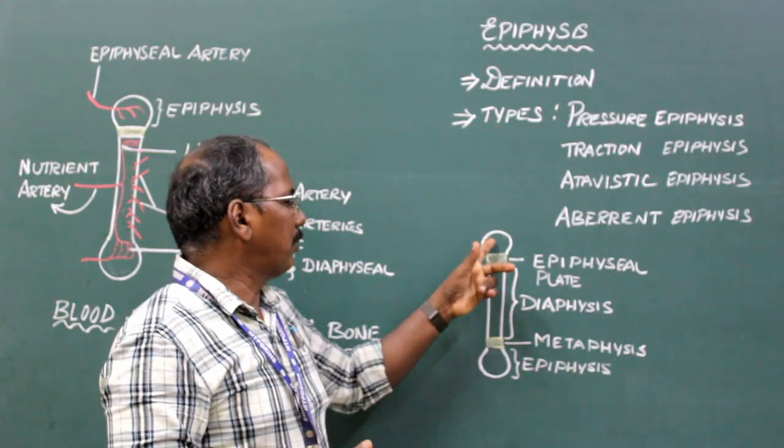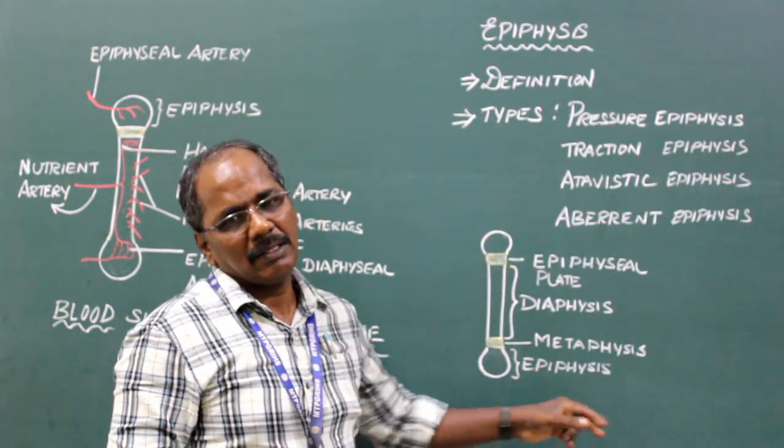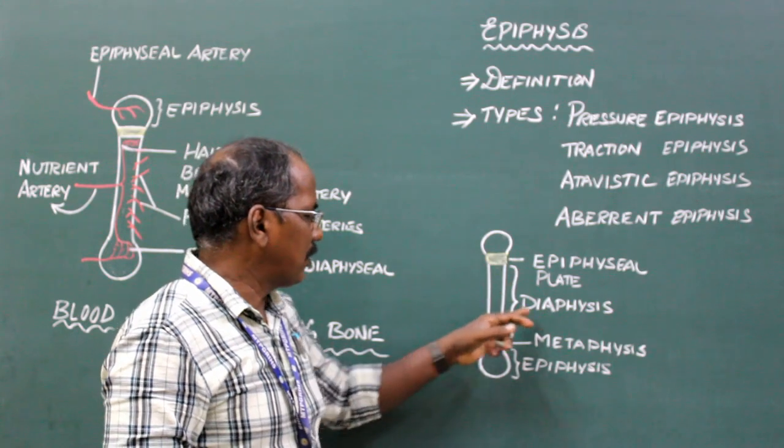The ends of the bone are known as epiphysis. The shaft is known as diaphysis.